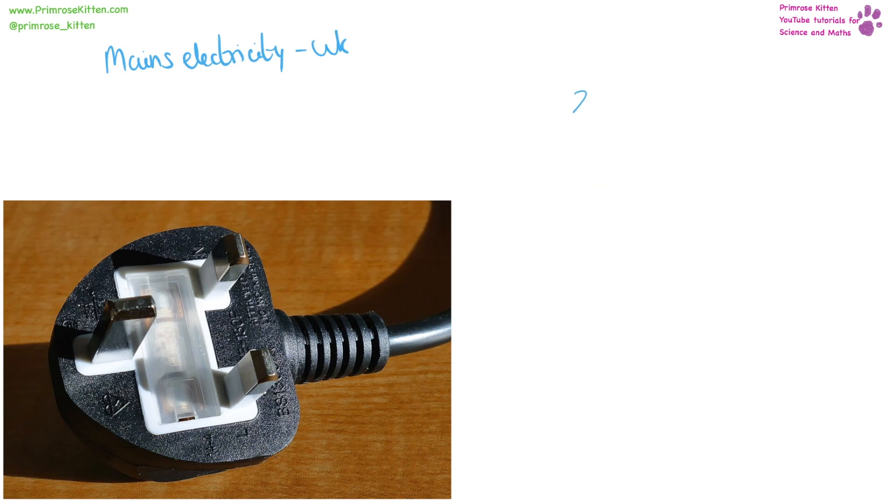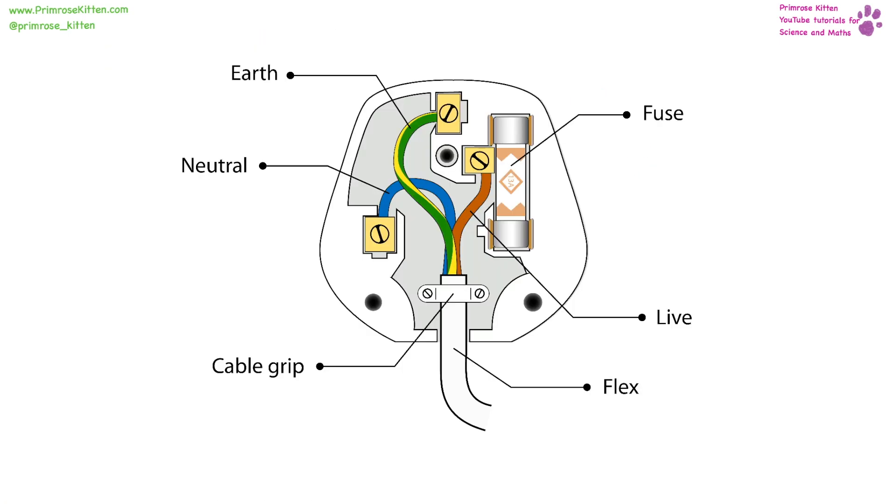Mains electricity in the UK is 230 volts and 50 hertz. Inside a plug socket we have a fuse which has a very small bit of wire going through it, where you can see from the circuit symbol for a fuse wire going all the way through. And this wire will melt if too much current goes through it, so that's the safety feature of the plug.